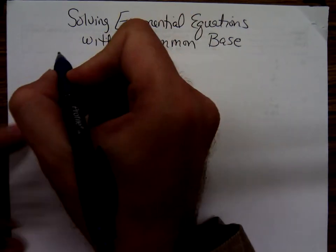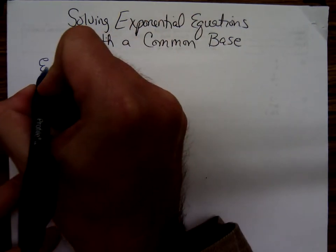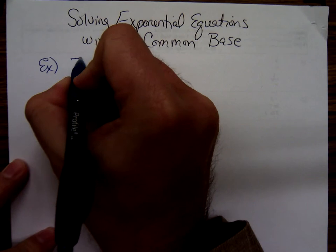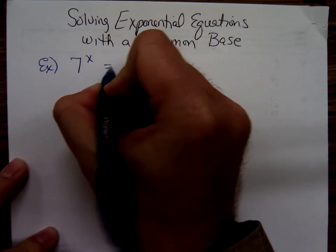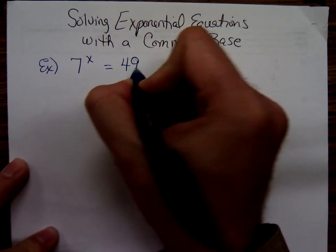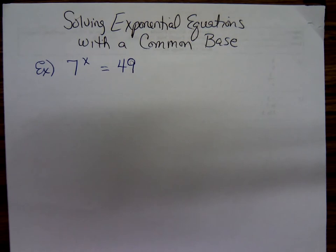If we just wanted a very basic equation to solve, we could solve something like this. All of you can do this just by inspection. 7 raised to the x power equals 49. What exponent would x have to be? Yes, someone said it right off, 2.